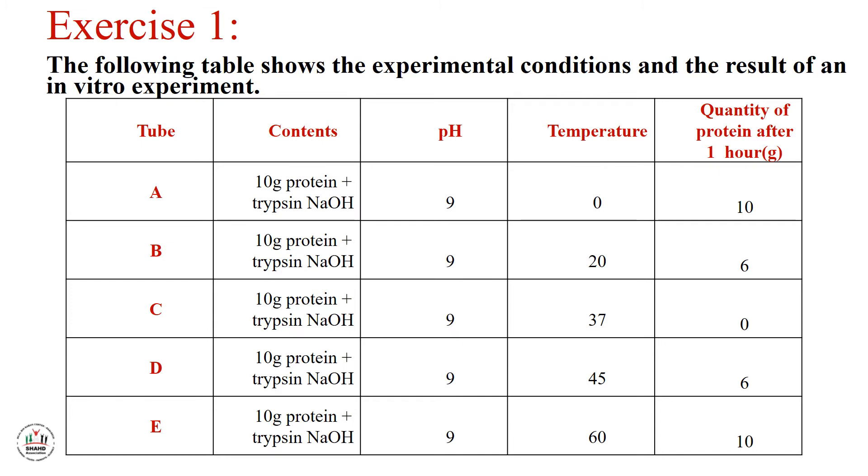Now the difference in all tubes is temperature. In A temperature is 0, B is 20, C is 37, D is 45, E is 60.